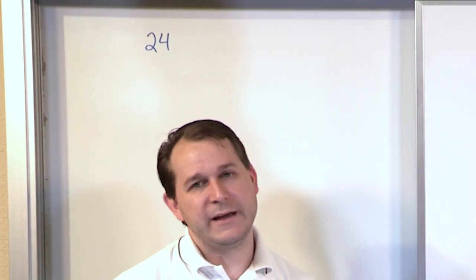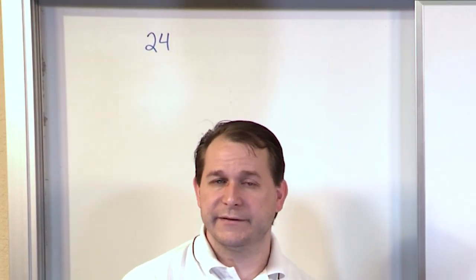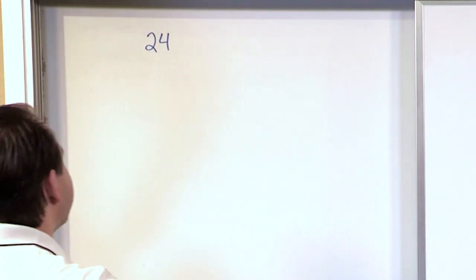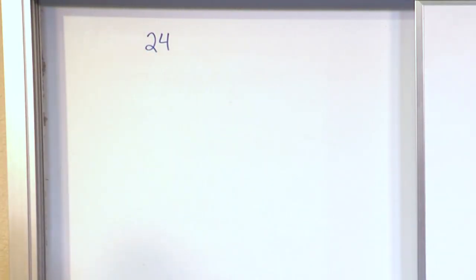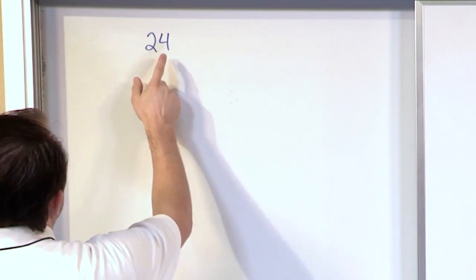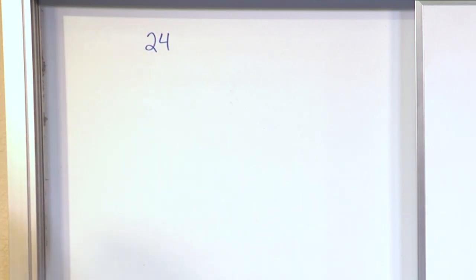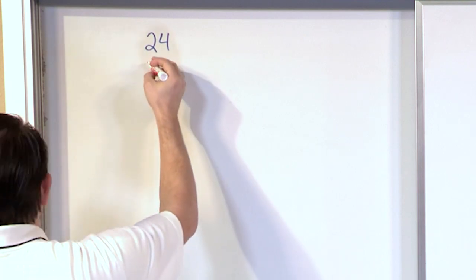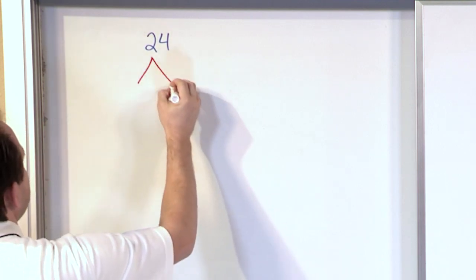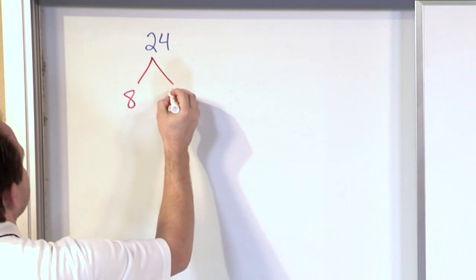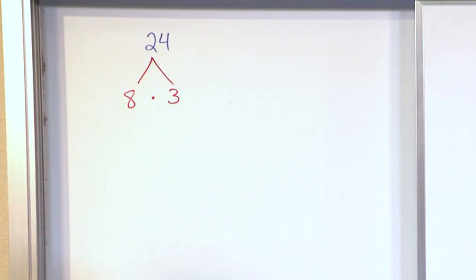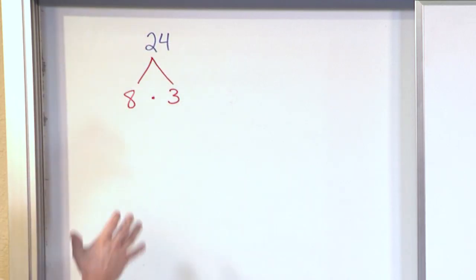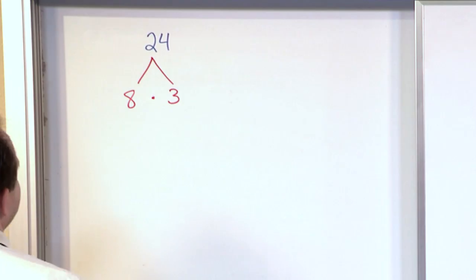Between you and me, I actually love building factor trees — they're actually fun for me. Let me show you how to do that. All you do is think of any two numbers at all that will multiply to give 24. So there are lots of different ways to proceed. In this case, let's just say that I pick 8 times 3. If you remember from multiplication tables, 8 times 3 is equal to 24. So this is building our factor tree.